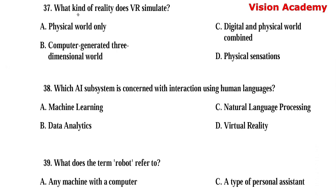Question number 37. What kind of reality does VR simulate? Option A: Physical world only. Option B: Computer generated three-dimensional world. Option C: Digital and physical world combined. Option D: Physical sensations. Here, option B, computer generated three-dimensional world, is the right answer.